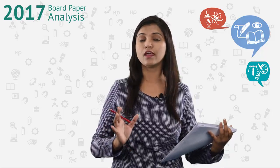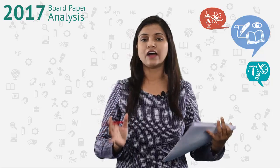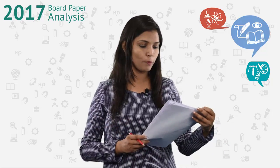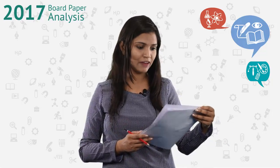Hi y'all, so today you had your Science board paper and I hope it went pretty well for all of you. Let us do a quick analysis of the paper as to what kind of paper we had today. As expected, there were 36 questions, and those who have studied the NCERT thoroughly along with the previous papers should have done very well. Let us open this paper — the paper I have today is Set 1, Delhi region.